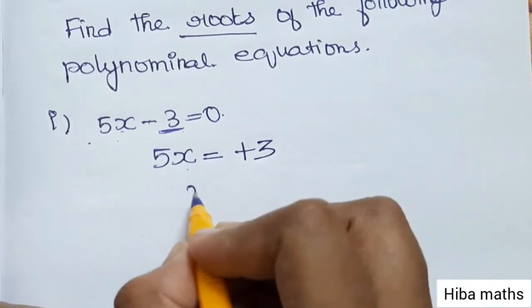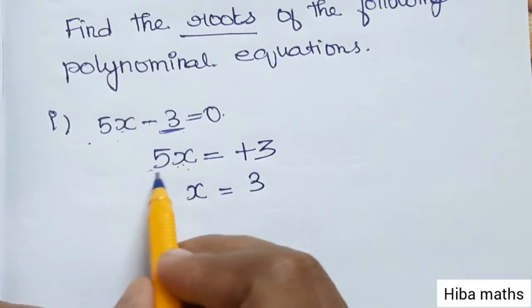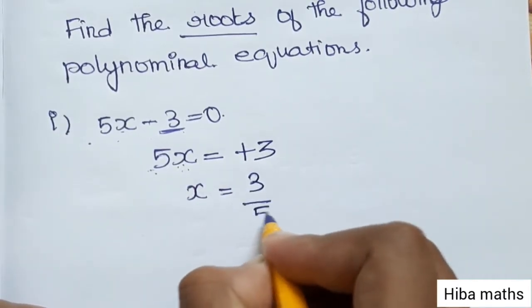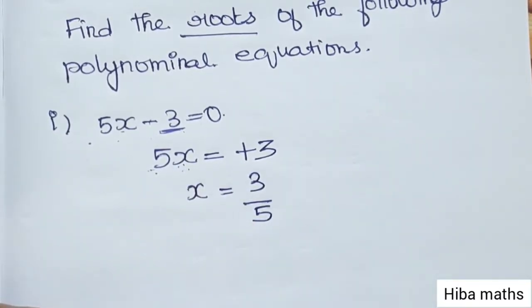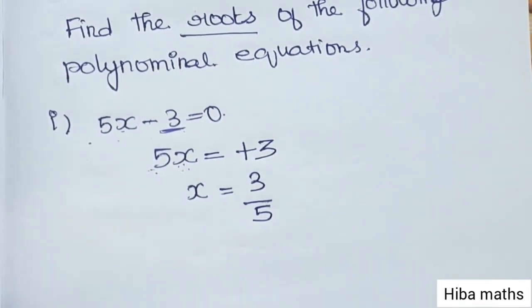We will find the x value. In the next step, the 5 is in the denominator. Moving from numerator to denominator, or multiplication to division, it is easy.